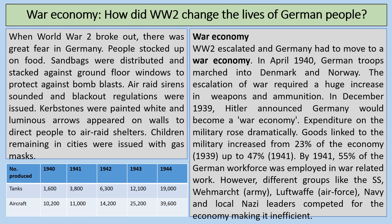However, different groups like the SS, the Wehrmacht — the army — the Luftwaffe — the air force — the Navy, and local Nazi leaders competed for the economy, making it inefficient. There needed to be more organisation of this so-called war economy. You can see in the stats table the huge increase in the number of tanks and aircraft being produced during this time.